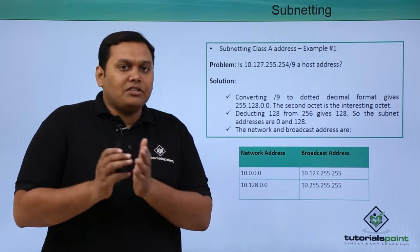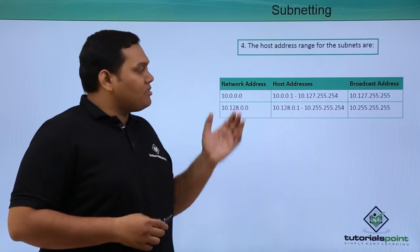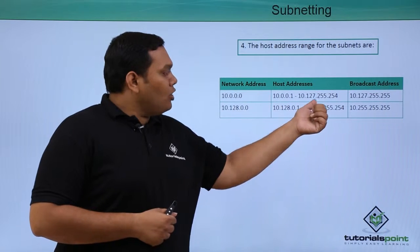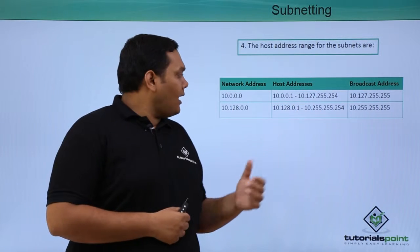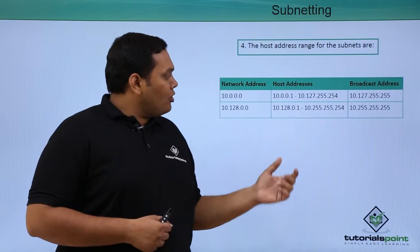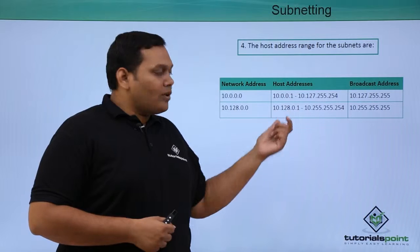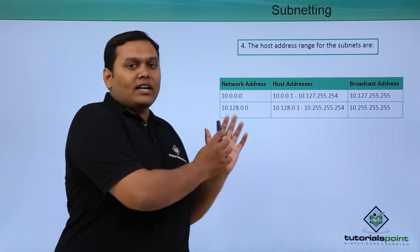What are the host address ranges here? The host address range of subnets starts from 10.0.0.1 to 10.127.255.254 and 10.128.0.1 to 10.255.255.254. This is one example. You will see another example in a different scenario.